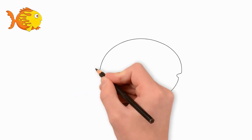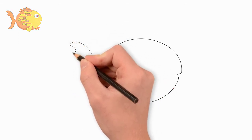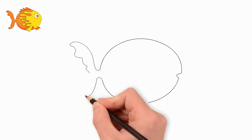First, draw a large oval. This will be the body of our goldfish. Now draw a big tail of a goldfish.